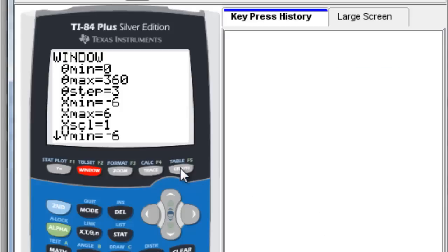So these two graphs will be plotted at the same time. And if we go back to our window, it's negative six to six so that we can see the graph a little better.